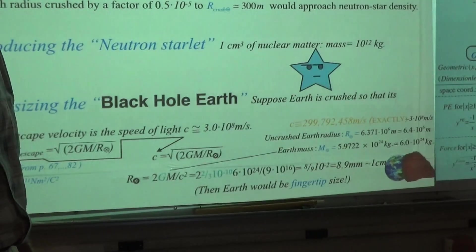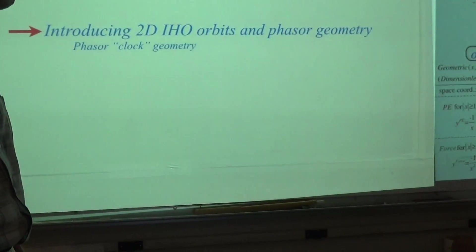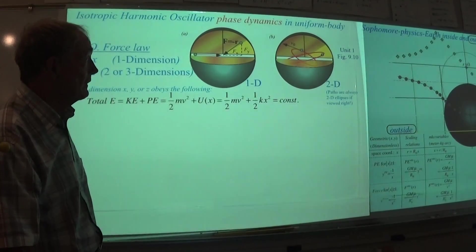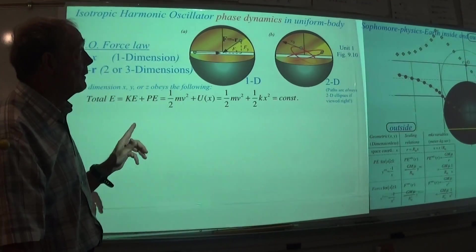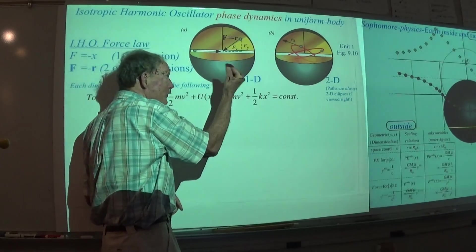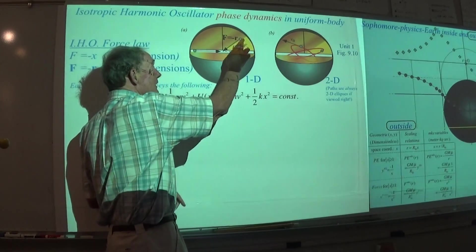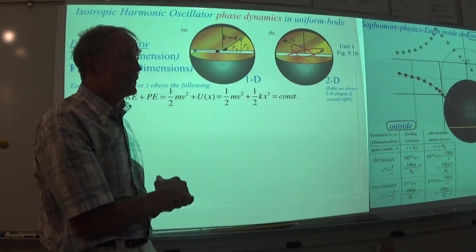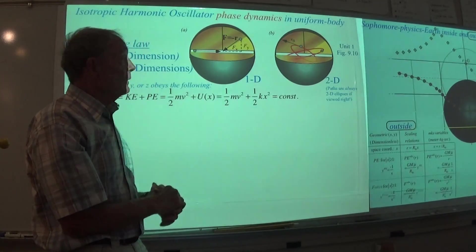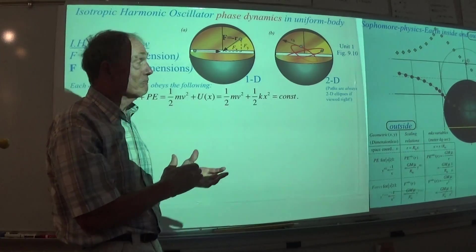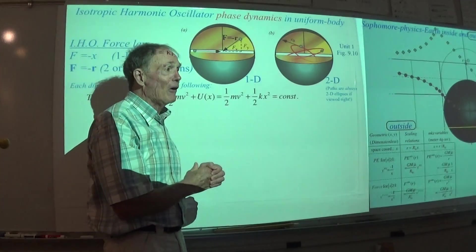This gives you a feeling for what we are up to. Now the next thing that we will do in the next lecture is talk about imagining some neutron's starlet, a little fingertip, doing its orbits inside the earth, which is a model for a lot of things.